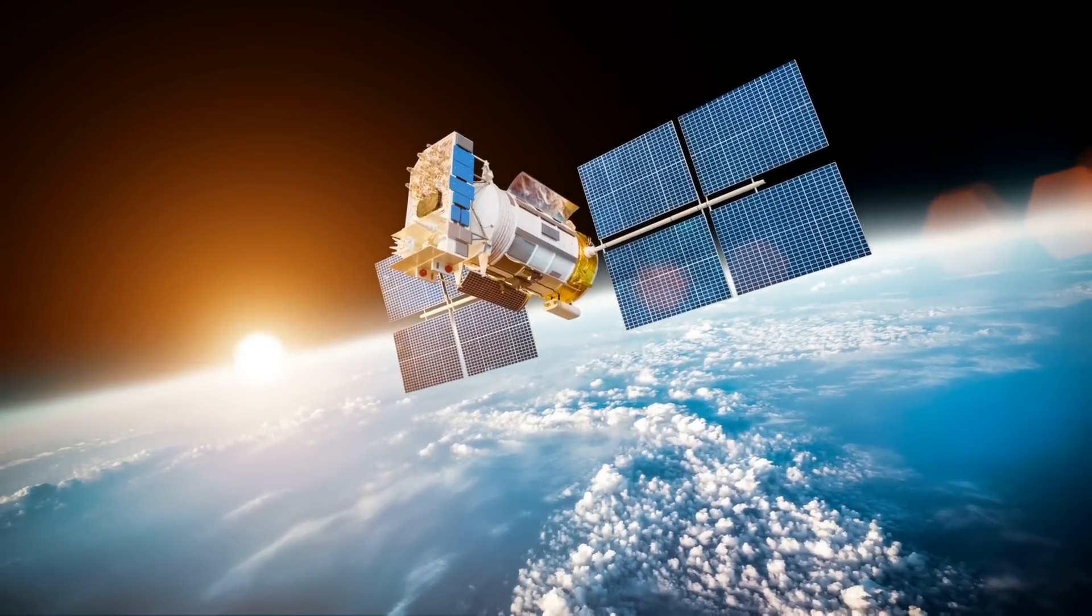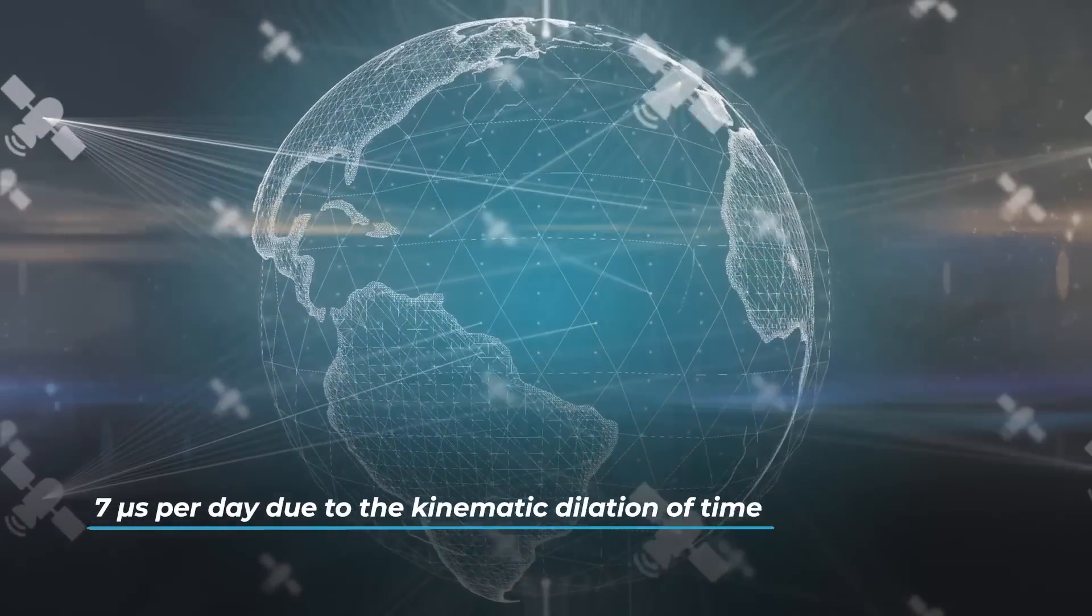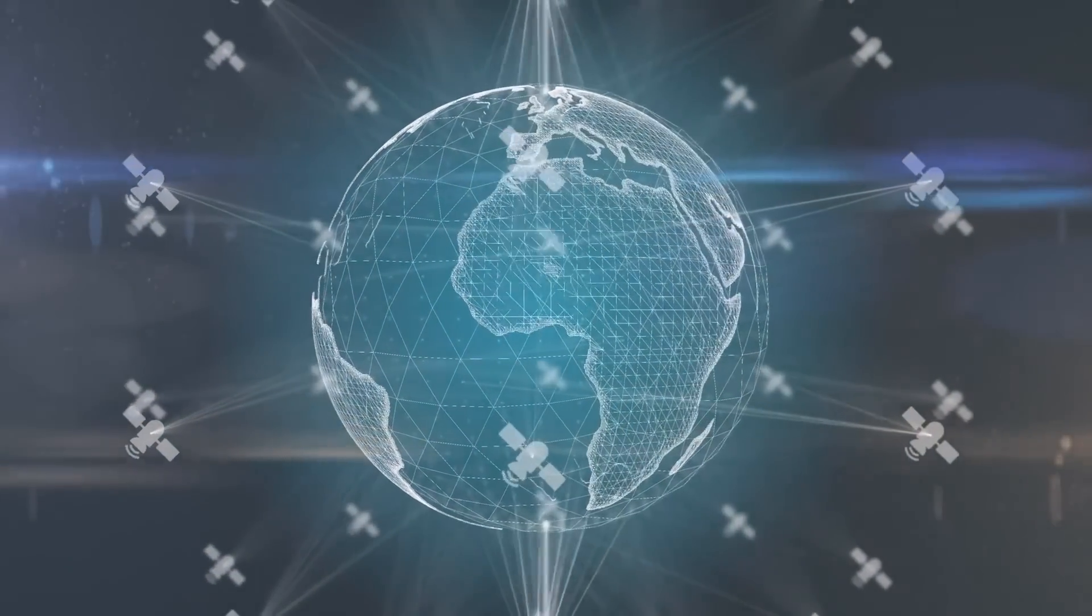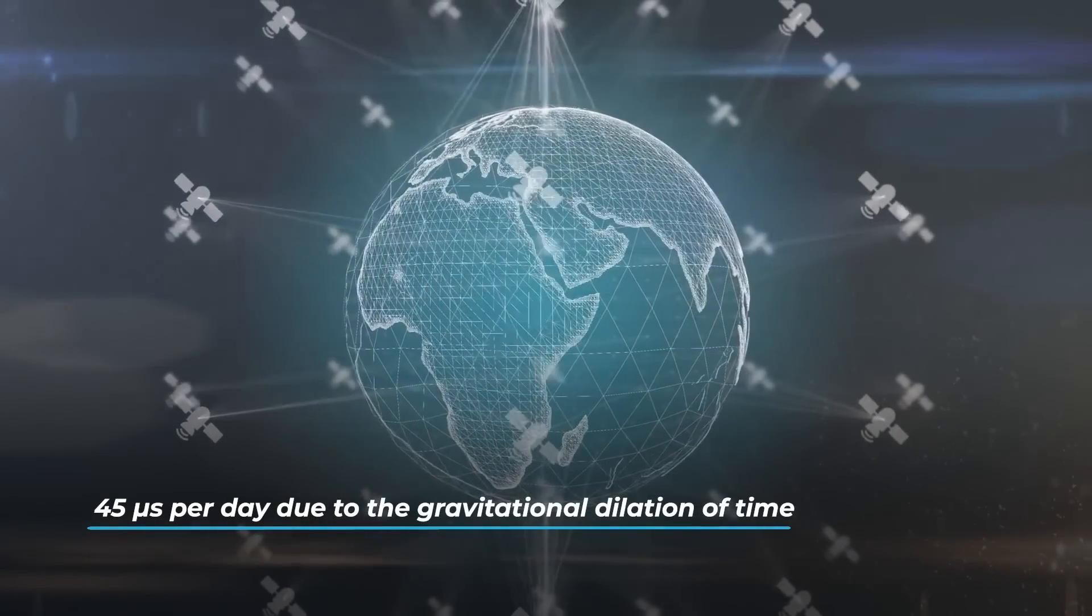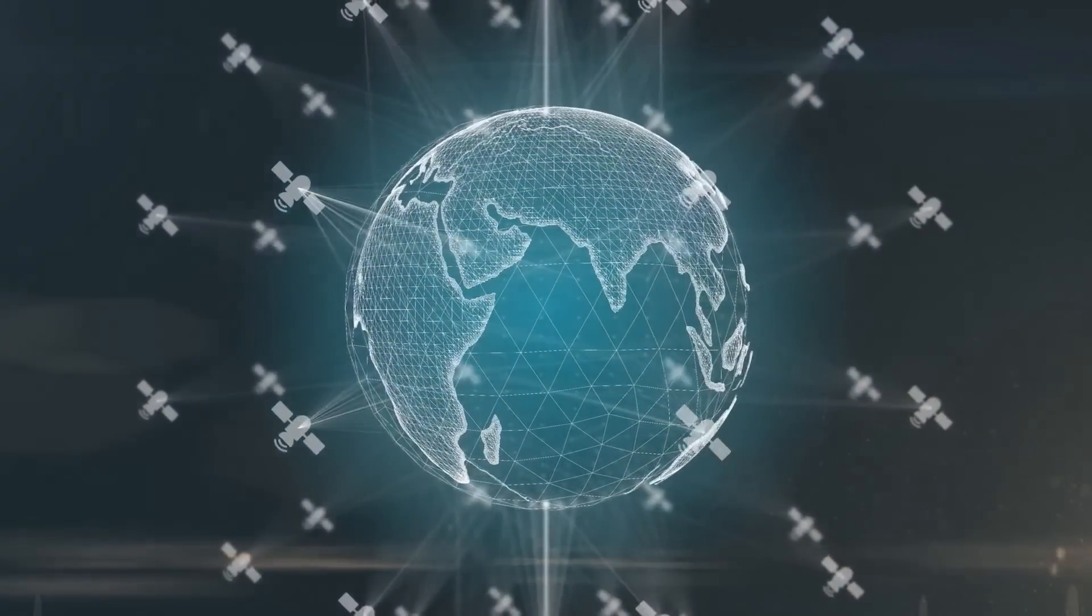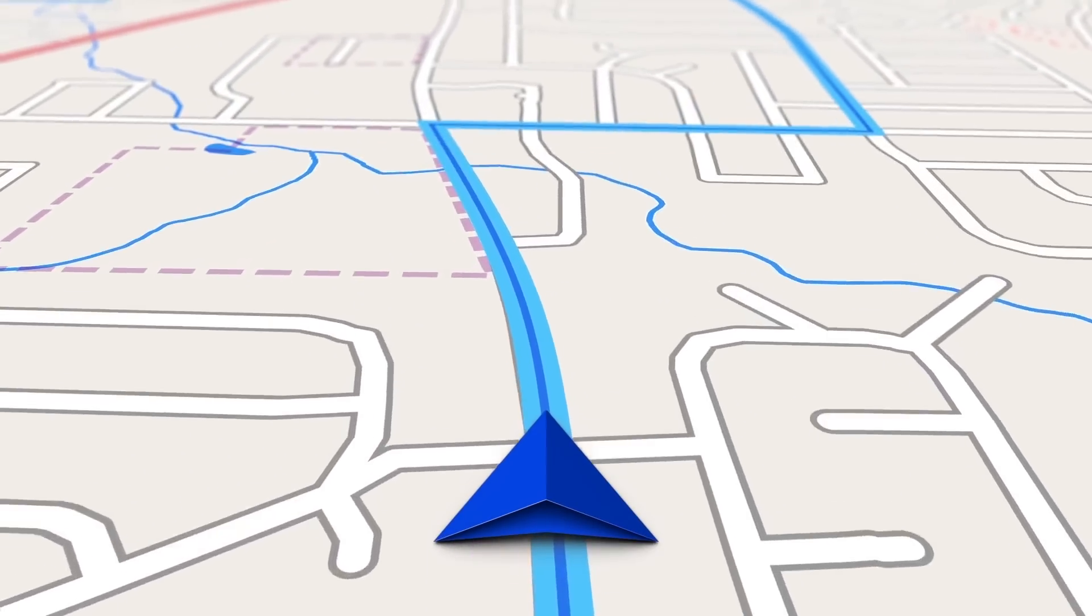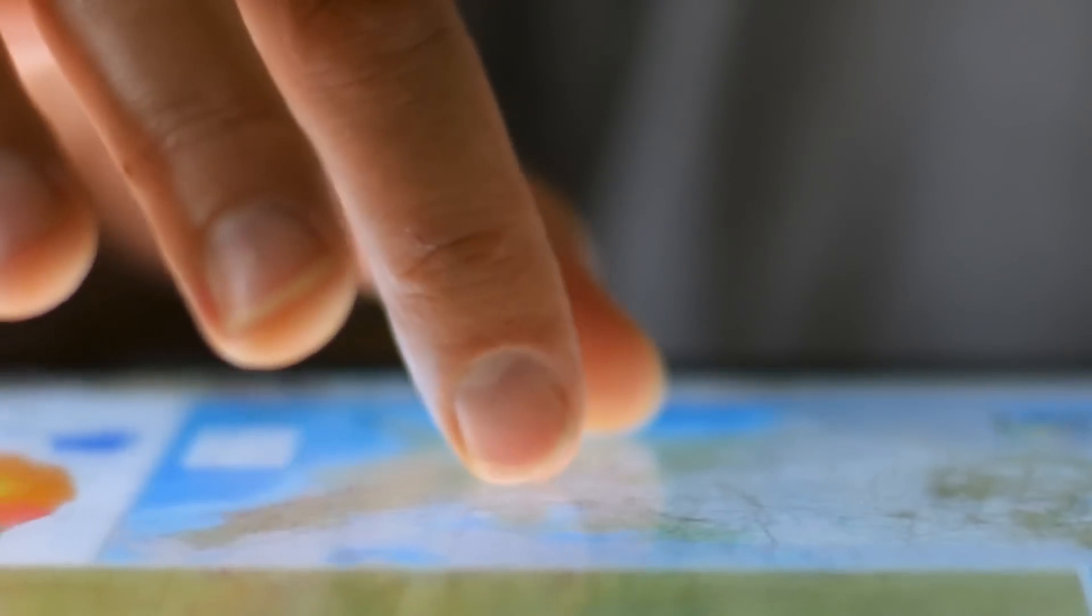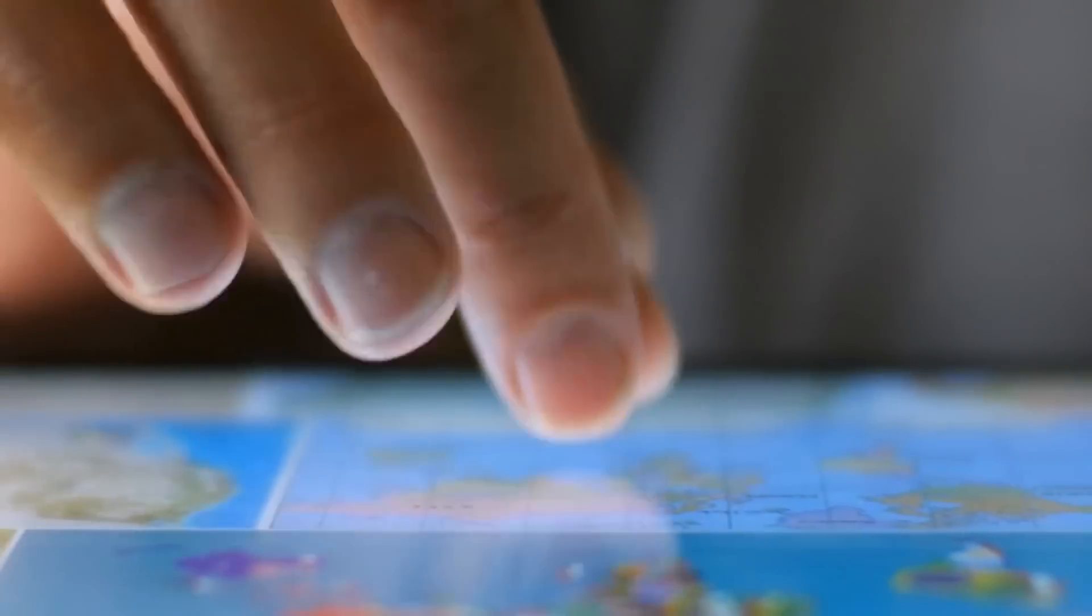There are two corrections: one of seven microseconds per day due to the kinematic dilation of time—satellite clocks go slower than that of terrestrial clocks—and another of greater magnitude and opposite sign of 45 microseconds per day due to the gravitational dilation of time—satellite clocks go faster than terrestrial clocks. If these effects were not taken into account, the daily error on localization would be greater than 10 kilometers. The fact that the GPS leads correctly to the destination therefore represents a continuous verification of the theory of general relativity.